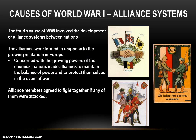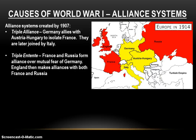The fourth cause of World War I is the development of alliance systems, formed in direct response to the growing militarism of Europe. Concerned with the growing powers of their enemies, nations begin to make alliances to maintain the balance of power and protect themselves in the event of war. Alliance members all agreed to fight together if any one of them were attacked — designed to prevent war, because the hope is that your enemy won't attack you if they know all your allies will back you up. By 1907, we've got two distinct alliance systems in Europe, two distinct sides really squared off against one another, rivals against rivals.